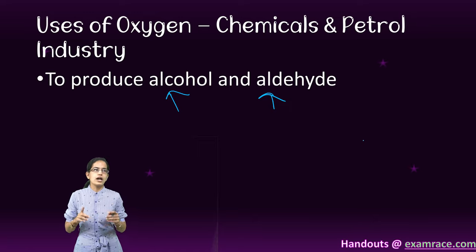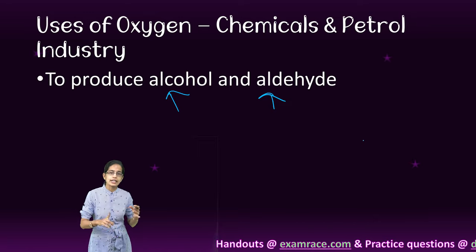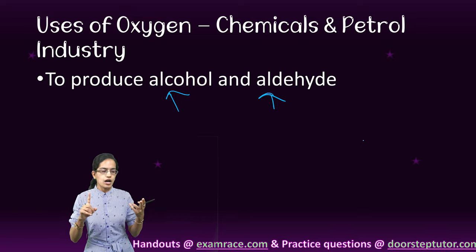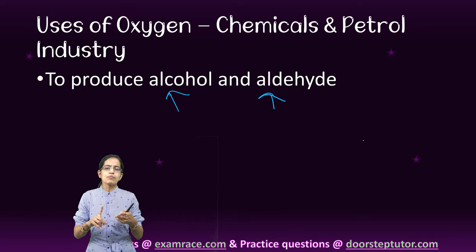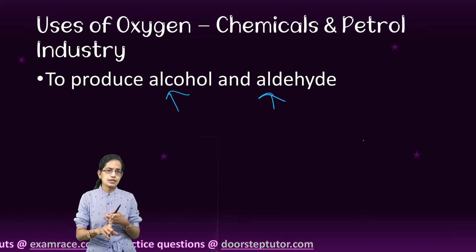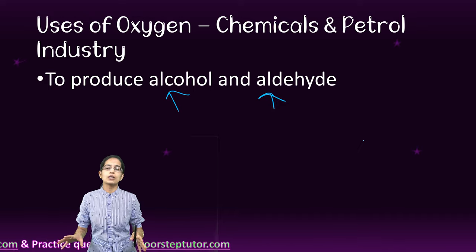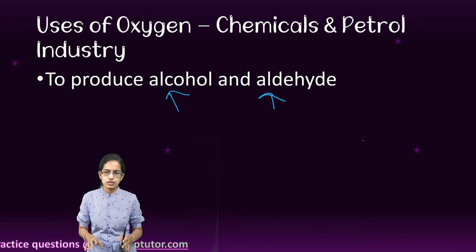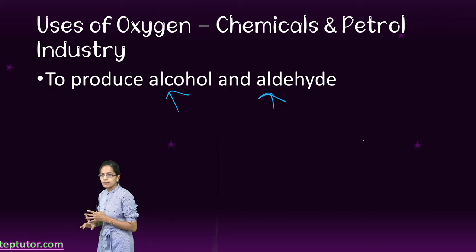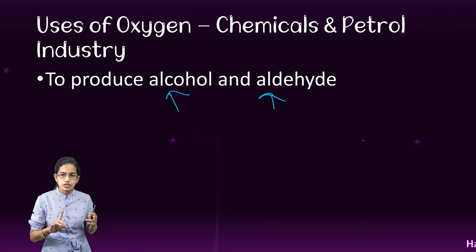In the process of creation of ethylene, propylene, PVC, or any other synthetic material like nylon, we would require oxygen. Definitely with the chemical and petrochemical industry, oxygen is used.